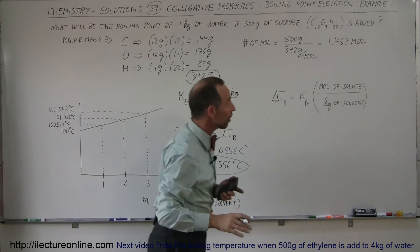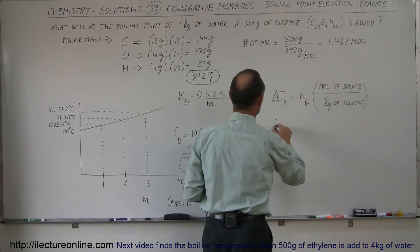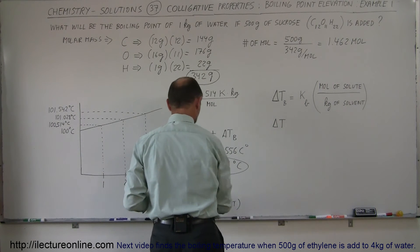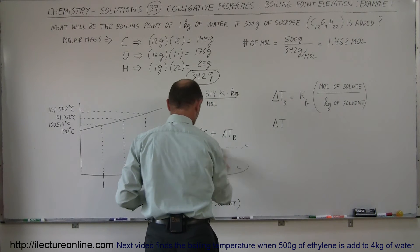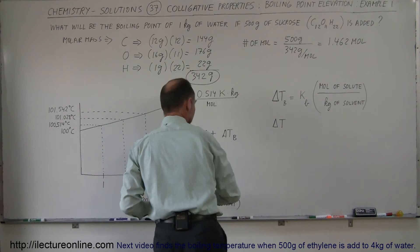So now that we know the number of moles of solute added to 1 kilogram of water, we're now ready to find the change in the boiling point. So the change in the boiling point is equal to, and I don't need that because that's going to be different. That was from the previous problem.